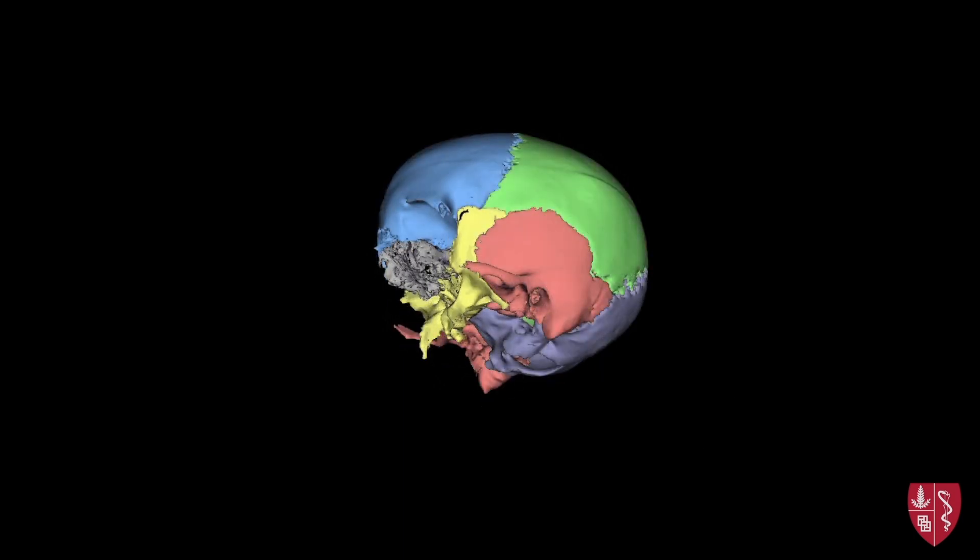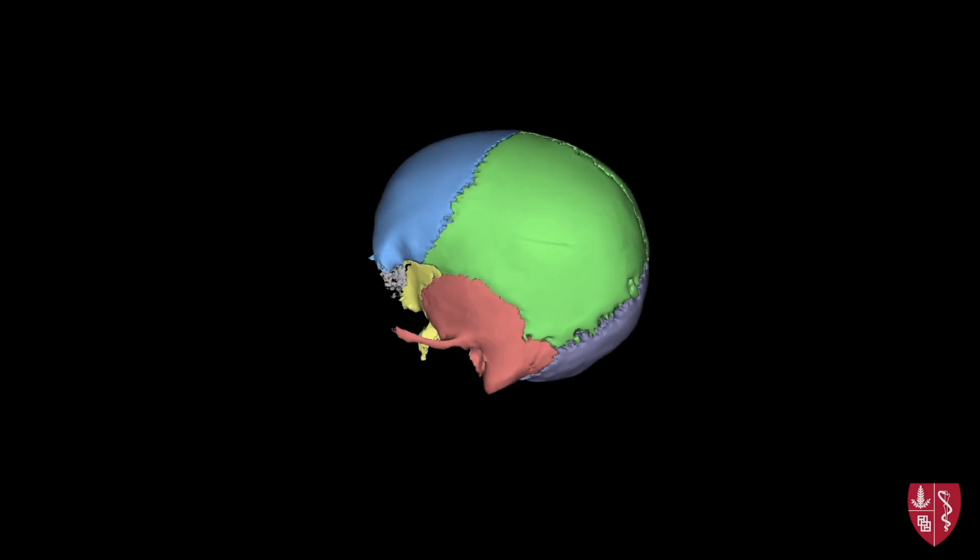And two sets of bones occurring bilaterally as pairs: the temporal bones as well as the parietal bones.